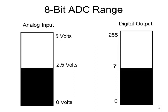So if our signal was 2.5 volts, what would the digital output be? You can probably see that 2.5 volts is half of 5. What's half of 255? If you do the math, you'll see that it's 127.5, and we don't deal with fractions of numbers, so we're going to round that to 128. I'll let you convert that into binary on your own.